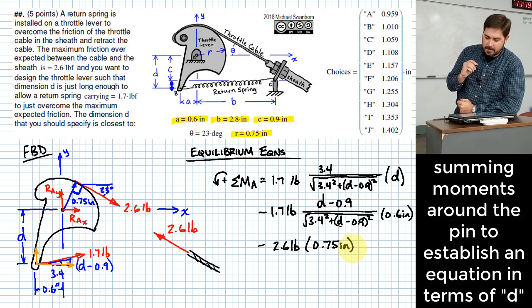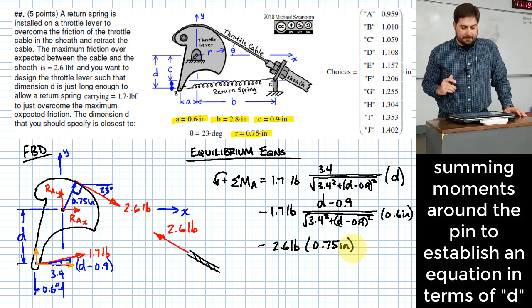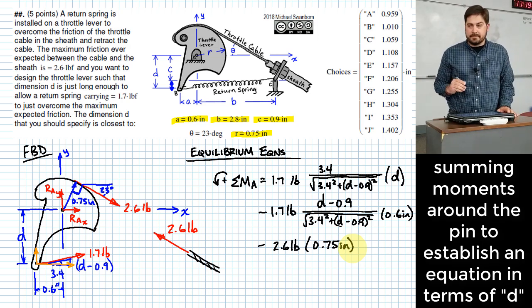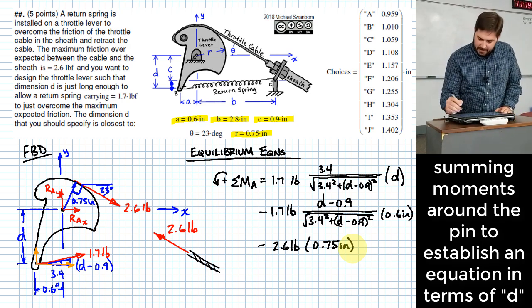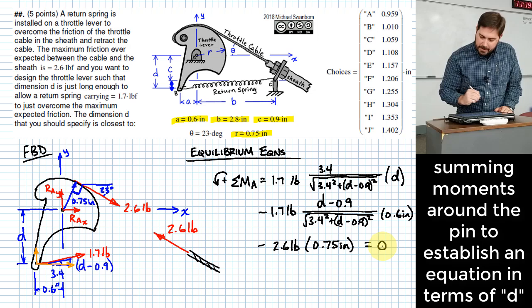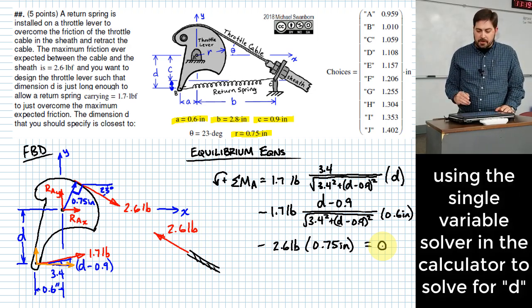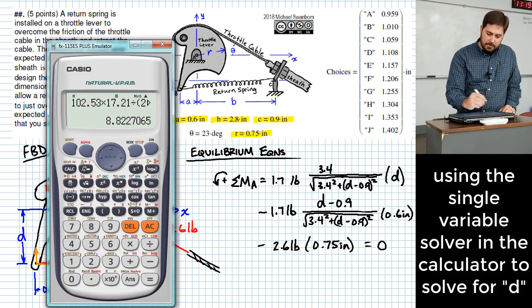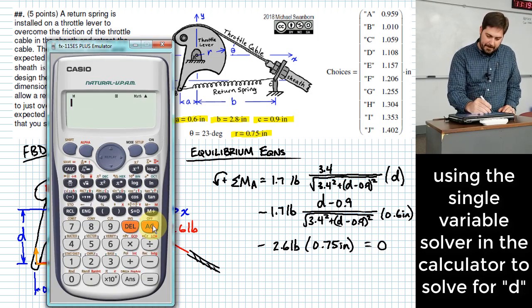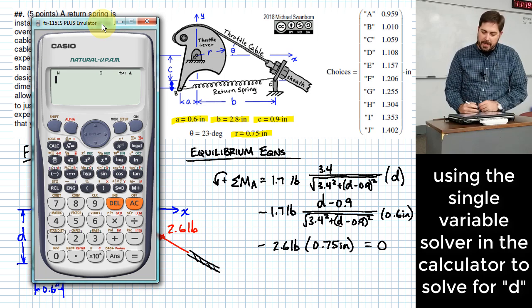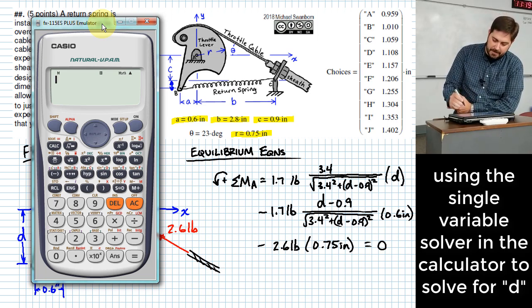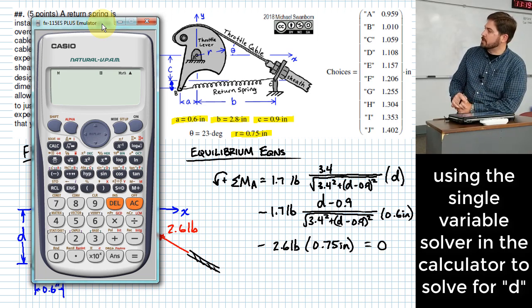Okay. And that takes care of that entire effect of the 2.6 pound force. Alright. So now what? Okay. Set this equal to 0, and now we need to solve for D, which looks a little scary unless you have good tools to use. Okay. Let me show you what tool I recommend that you think about using. You can type this whole equation right into your calculator and just have it solve.